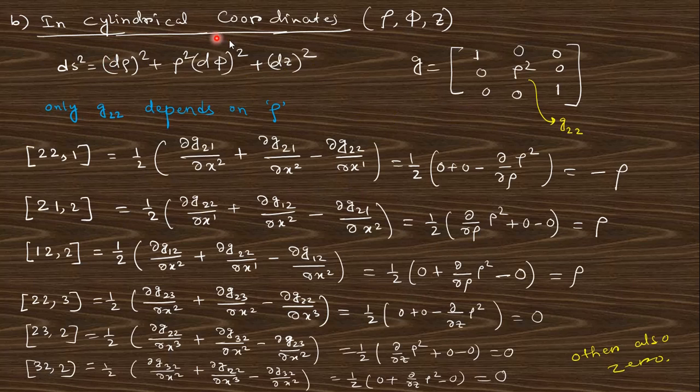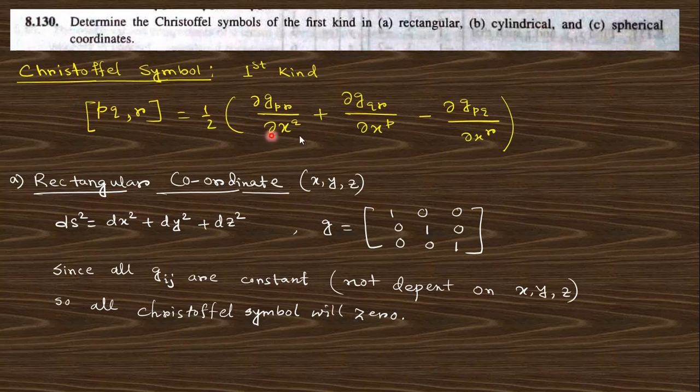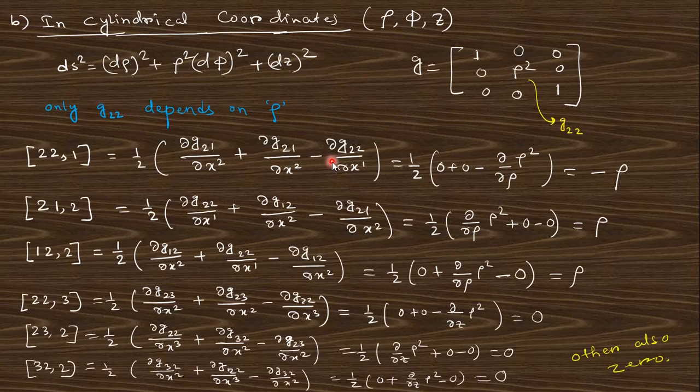Next comes the cylindrical coordinate system. This will be rho phi z and ds square can be written as like that, so G will be like this. Here only we can see this is G22 which consists rho square, so others will be zero. So the term where 22 will be must be present will be, others will be zero. So 221 if we take, since we need 22 present there must be 22 in this cyclic. If you put 221, this is del G21 just put in this formula, you will get this expression. Since G22 will be rho square and other terms will be zero, these two are zero and this will be rho square. So del rho square del rho that will be minus rho.